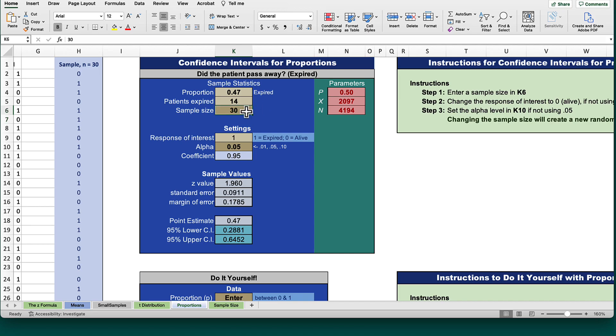Now re-enter 30 as your sample size. This gives you another sample, which has another sample proportion. Compare it to the population proportion of 0.5.